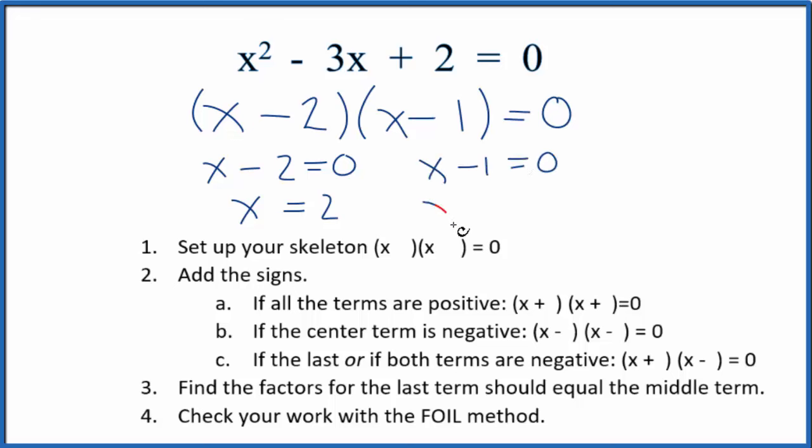If we put 2 in for x and work this out, it'll equal 0. Likewise, if we put 1 in for x here and work it out, we'll get 0. So we know it's correct when we can do that.